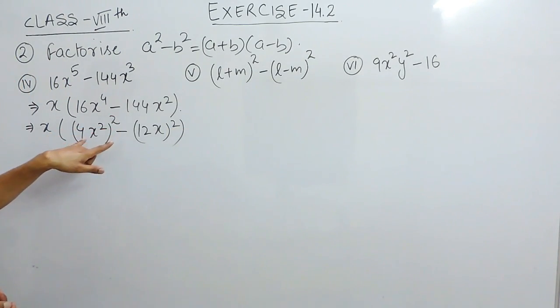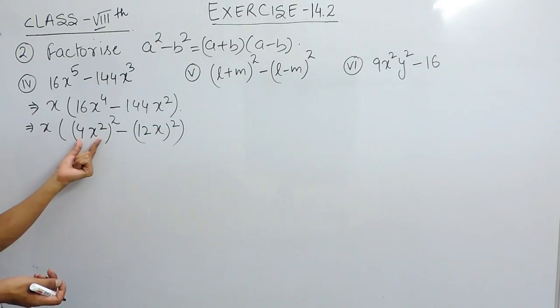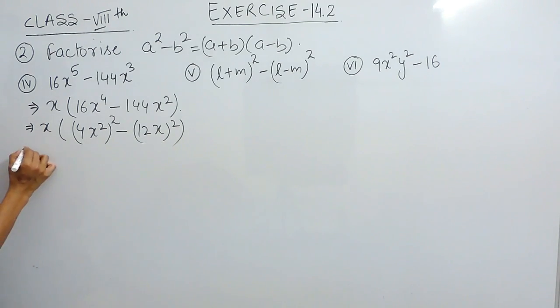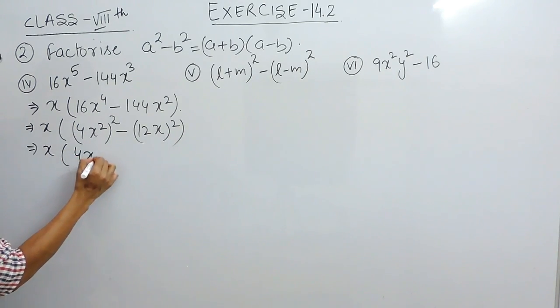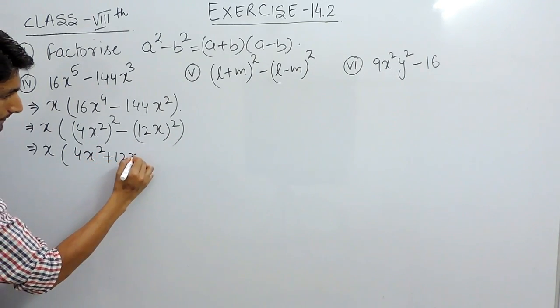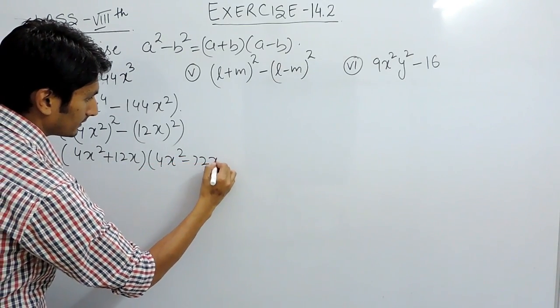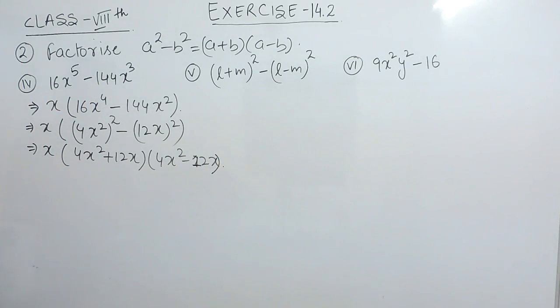I have converted this expression into a² - b², where a is 4x² and b is 12x. And we know that a² - b² is basically equal to (a+b)(a-b). So this would be the answer for the first part.